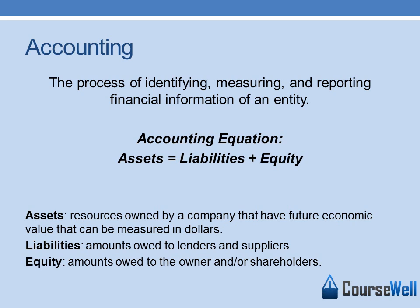There is a thing called the accounting equation: Assets equal liabilities plus equity. Assets are resources owned by a company that have future economic value that can be measured in dollars. An asset could be land, building, cash, or a future receivable. Liabilities are amounts owed to the lenders and suppliers — essentially what you owe. Equity are amounts owed to the owner and shareholders.